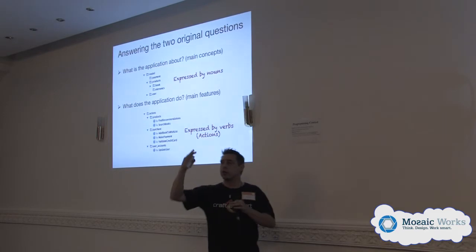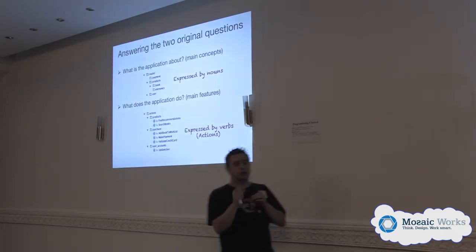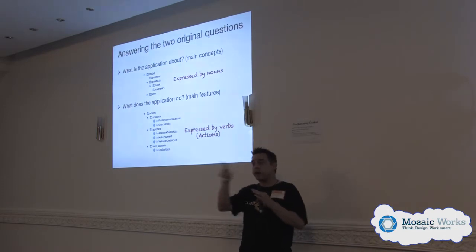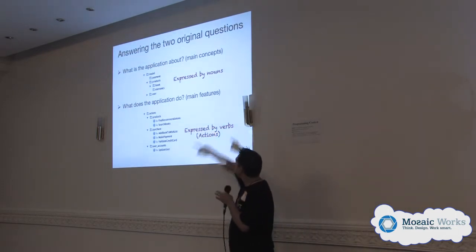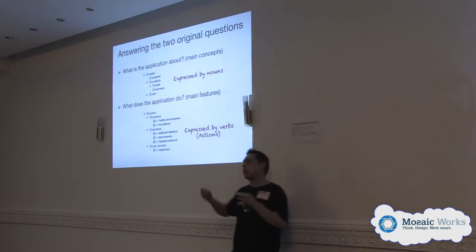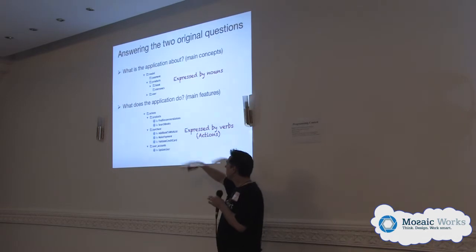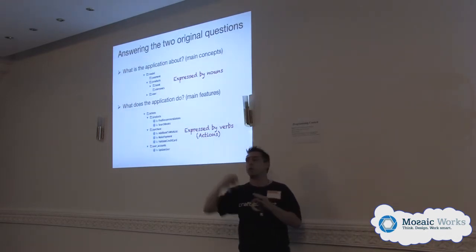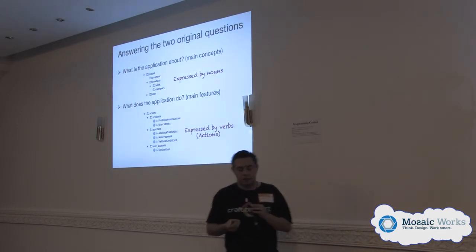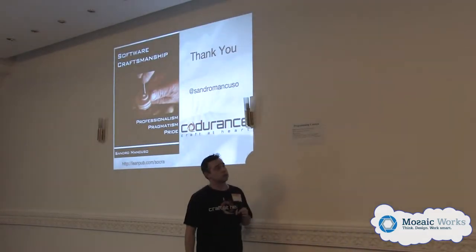So how do I answer the original questions? If I join a project now, I go to my model, expand it — using nouns — and that tells me what the system is about. If I go to my actions, expand that, I know what my system does. That leads me through the path to find whatever bug, gives me clear places to put behavior. If I want to add more behavior, I know exactly where to go. It maps things much better, it's easier to work this way, and it's easier to talk to the business and model the business.